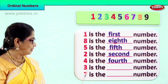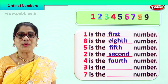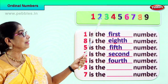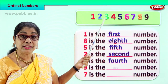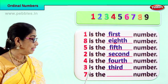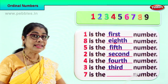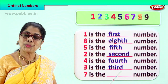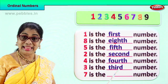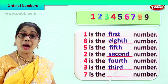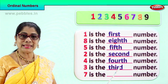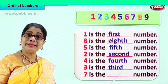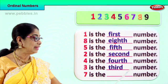Let's look at this — there's number three. Let's look at the ordinal position. First, second. Number three is the third number. Let's spell third: T-H-I-R-D. Say it again: T-H-I-R-D. Number three is the third number.